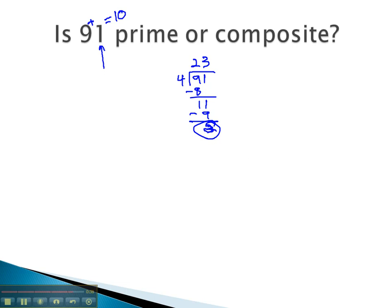5 doesn't go in because the last digit's a 1. 6 doesn't divide in because it did not pass the test for 2 and 3.